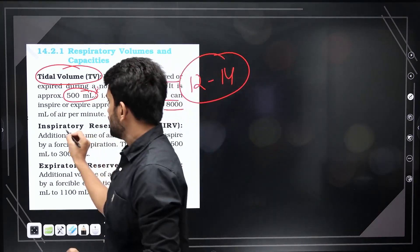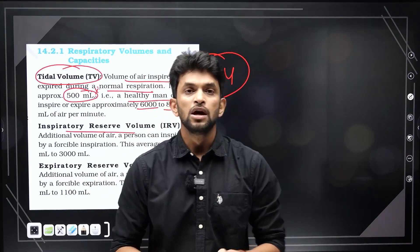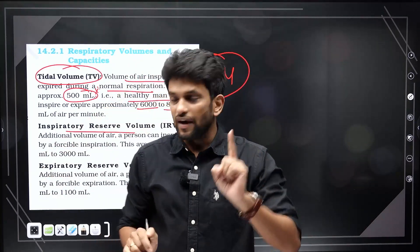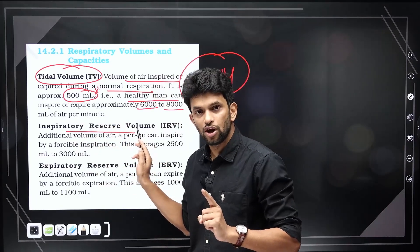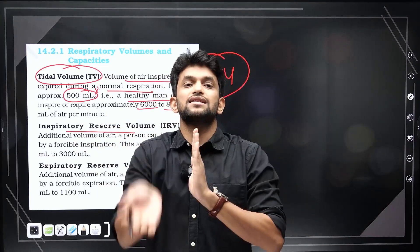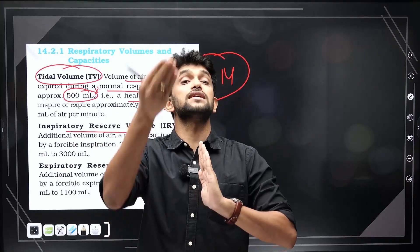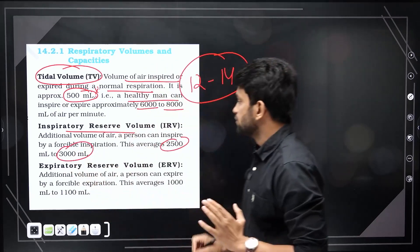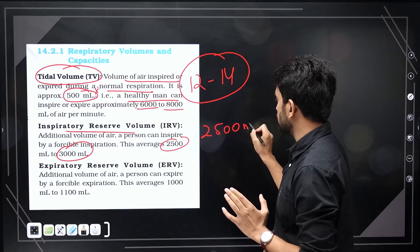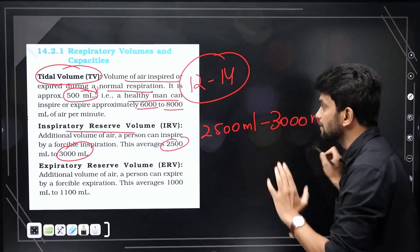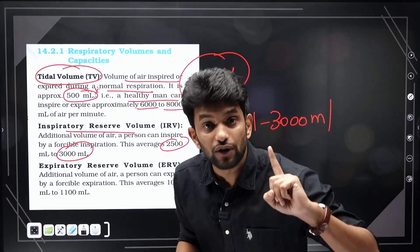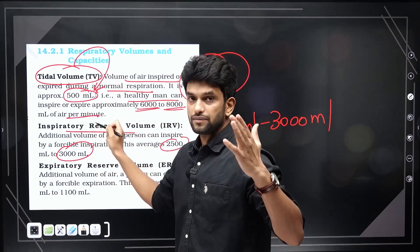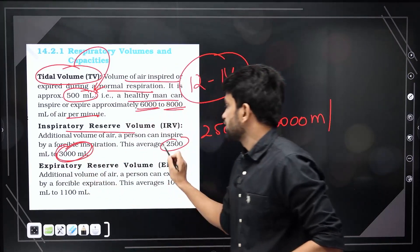The second is Inspiratory Reserve Volume. This is the extra volume you can save — your maximum additional air inhaled beyond normal inspiration. Inspiratory Reserve Volume is 2,500 to 3,000 ml. This value is important for the exam.